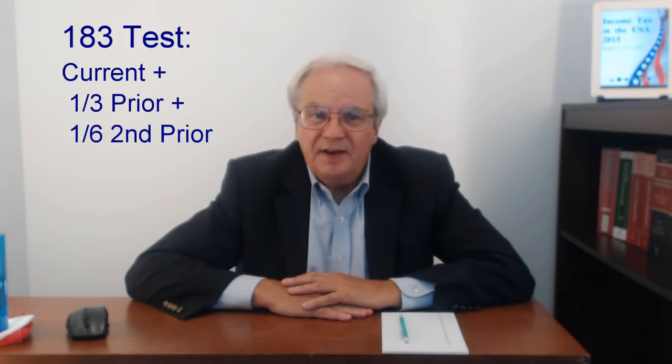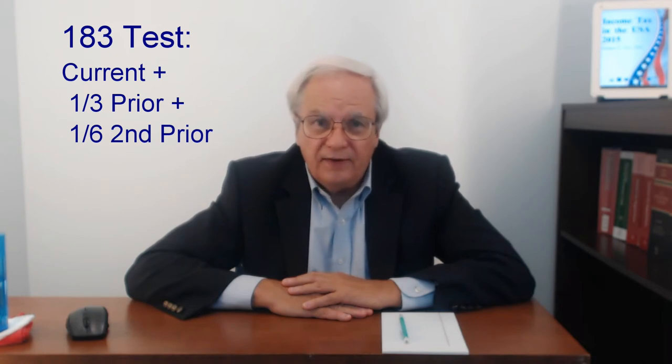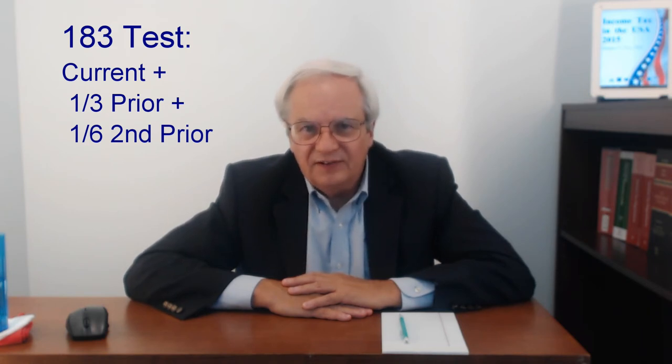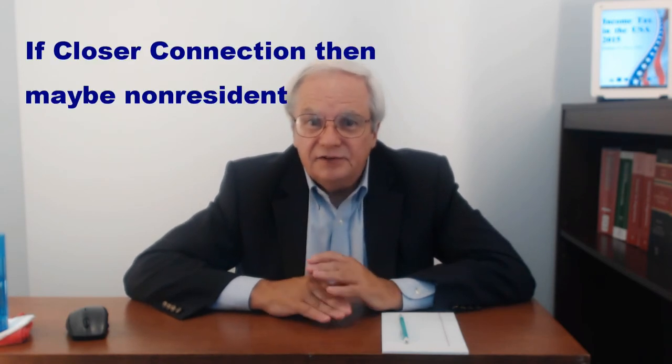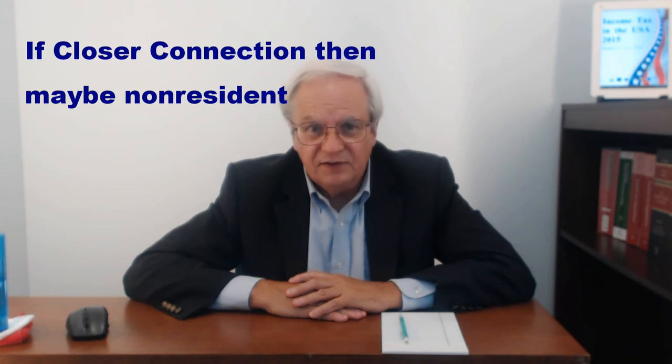For this test, add up the number of current year days, one-third of first prior year days, and one-sixth of second prior year days. If this number exceeds 183, then they are resident. However, if they can show that they had a closer business and personal connection to another country, they may still be non-resident. Tax treaties often have a tiebreaker rule that can treat the individual as resident of one country or the other when the rules say that they're resident of both. Residence for flow-through entities such as partnerships is irrelevant. The partner's residence is what counts, since the partnership is not taxed.